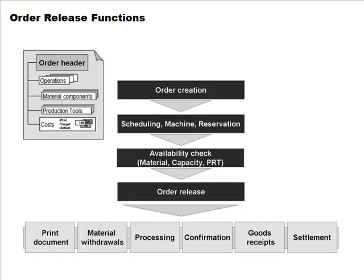A student asks: is this the same order created from the planned order in MRP, and is MRP carrying out the rest of these functions? The answer is: MRP has stopped with the creation of the planned order. Order release happens in manufacturing. You choose whether to convert to a production order or not, and that happens in manufacturing as well. Conversion to production order and all subsequent processing is in manufacturing execution, not MRP.